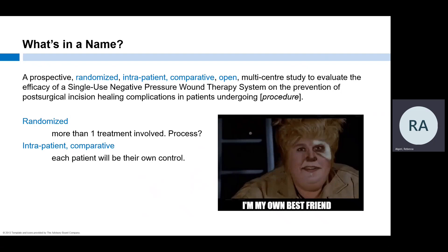Comparative means the study will look at outcomes produced by each device to see if one is more effective, inexpensive, safer, etc. Open means this study will not be blinded—everyone is going to know which device is placed on each surgical incision. Since subjects will receive both the investigational device and standard of care, the likelihood of subjects dropping out because they don't like the arm they've been randomized to is minimized.